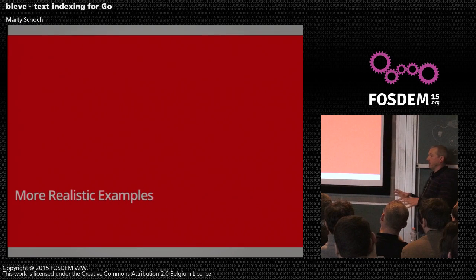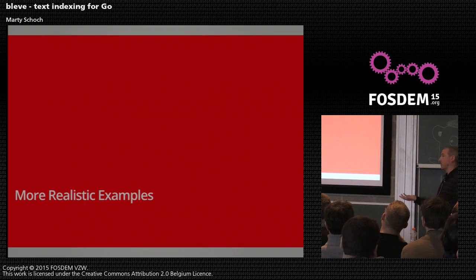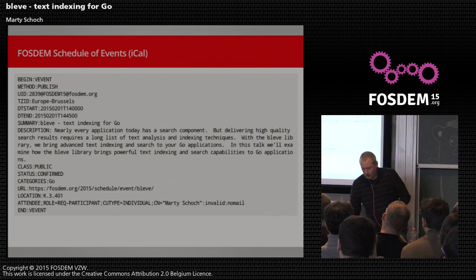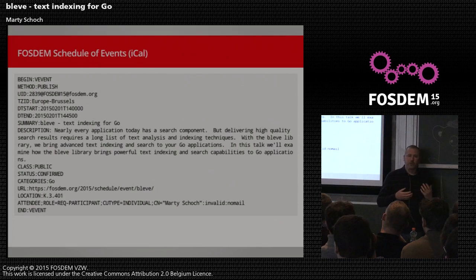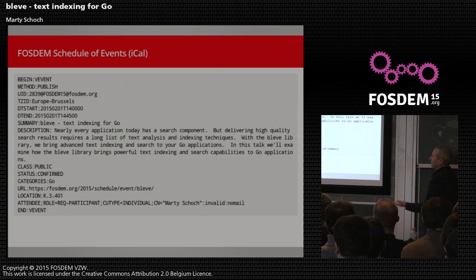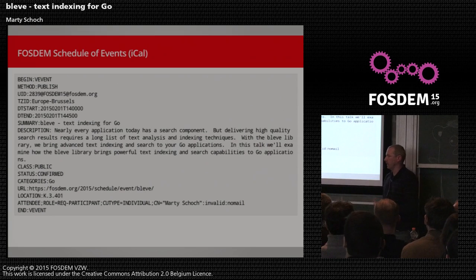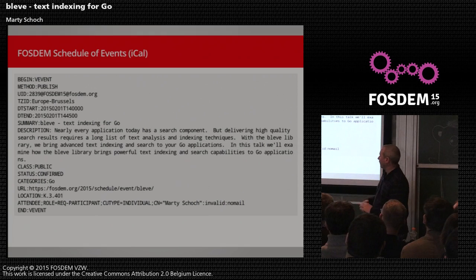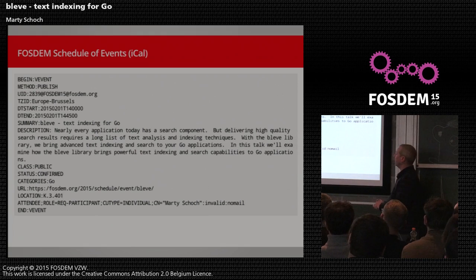In about 20 lines of code we can create an index, and in another 20 lines search through it. But you probably want a more realistic example. I was trying to find a good data set the audience would be familiar with, and I came across the FOSDEM schedule of events, which they publish in a variety of formats. One that was pretty easy to parse was iCal. Here's a sample record describing this talk — there are about 550 of these on the full feed.